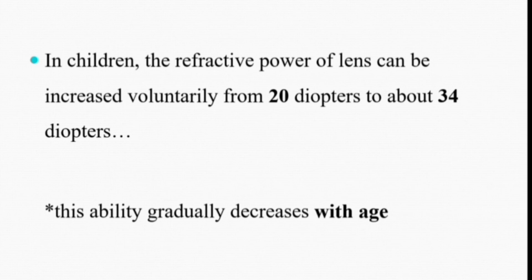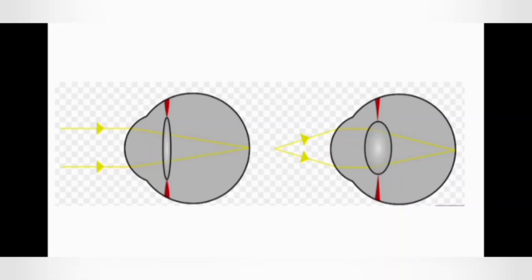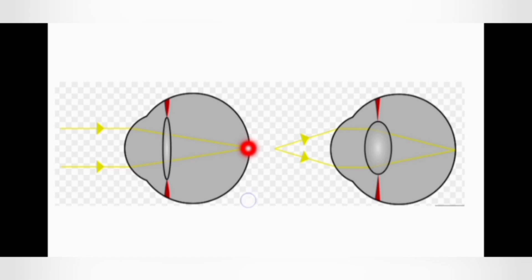In this figure we are seeing the process of accommodation. On the left side there is an eyeball in which the light rays are coming from a distant object, passing first through the cornea and then through the lens, and they are focusing on the retina. On the right side you are seeing an eyeball in which the light rays are coming from an object very close to the eye, so diverging light rays are falling on the cornea and then on the lens.